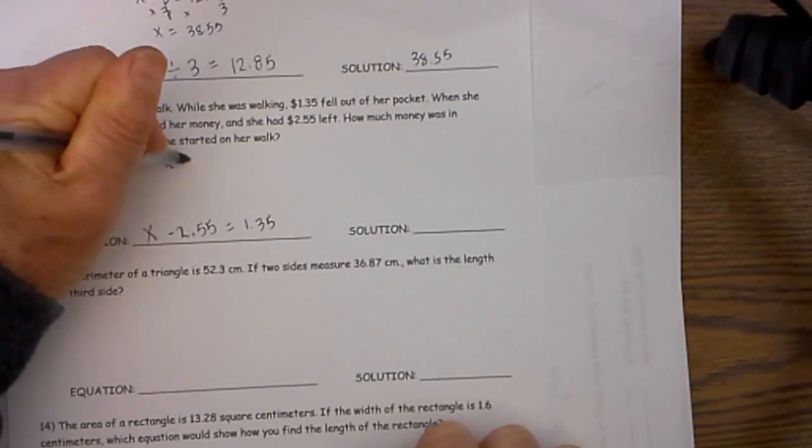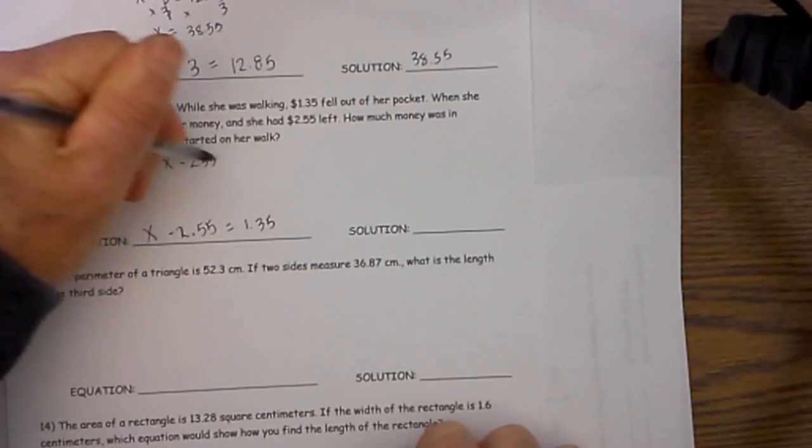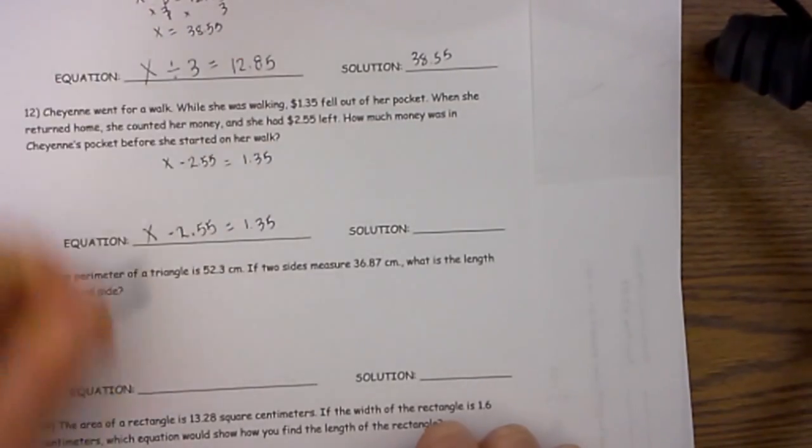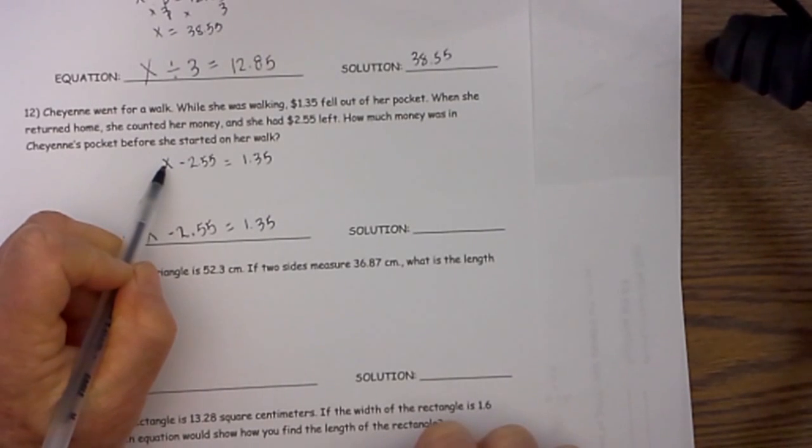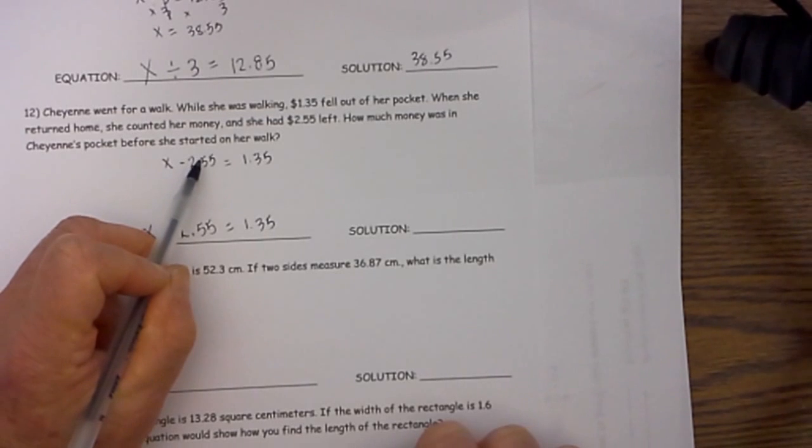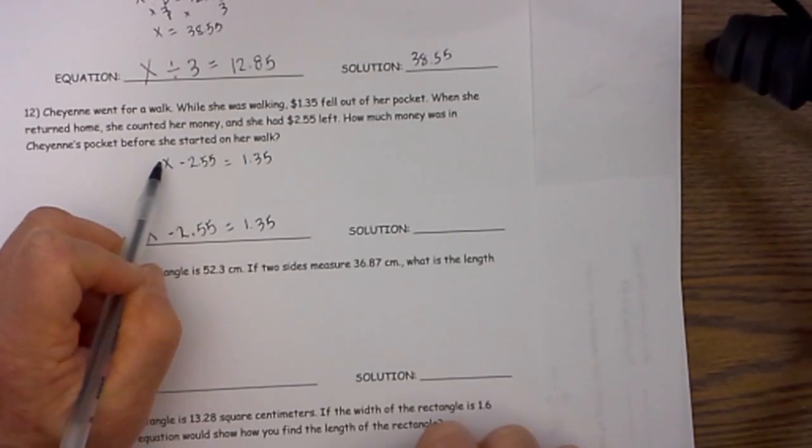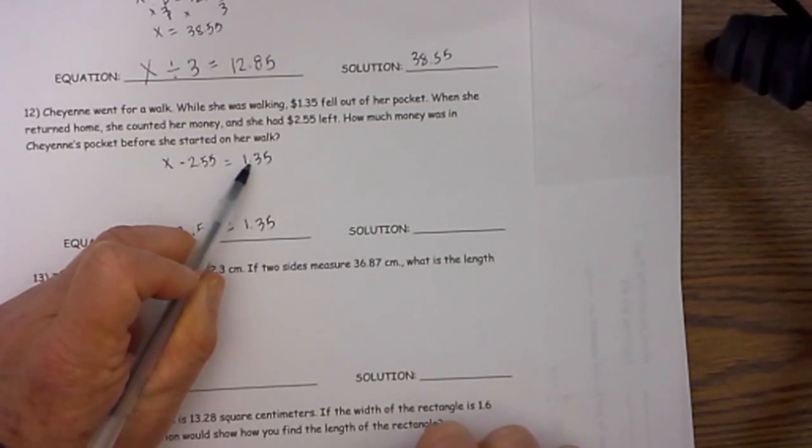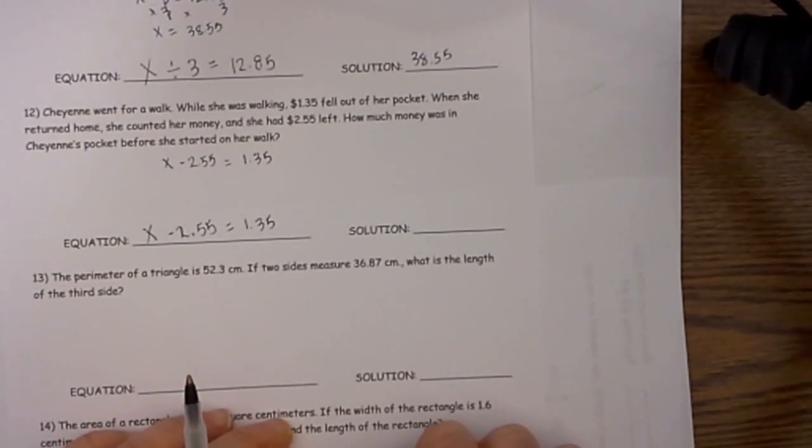So we have x minus $2.55 is equal to $1.35. This was her grand total. She counted her money when she got home so she had $2.55. So we are going to subtract the grand total minus the amount she got when she got home and that is going to equal how much fell out while she was walking.